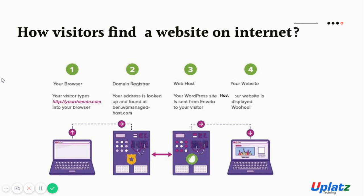How do visitors find a website on the internet? There are four important aspects involved. First is the browser — it can be Chrome, Internet Explorer, or Mozilla Firefox. Any browser you use is your input window to find or reach a website. The browser also involves a search engine, which is how you search websites or web links through keywords. If you know a specific website, you can type something like www.yourdomain.com directly into the browser.